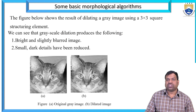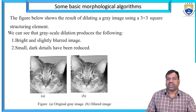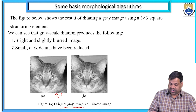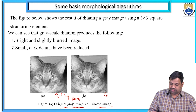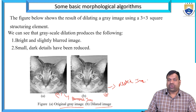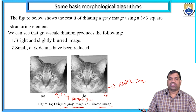The figure below shows the result of dilating a grey image using a 3×3 square structuring element. We can see that greyscale dilation produces a bright and slightly blurred image, and small dark details have been reduced. Figure A is the original grey image and figure B is the dilated image — there is a small blurring difference from the original to the output, which is removed with the dilation process.